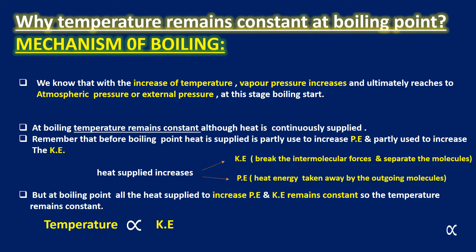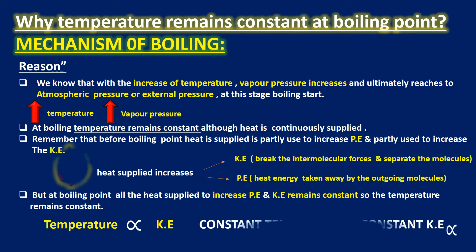So the question is: why does temperature remain constant at boiling point? To understand this, let's start understanding the mechanism of boiling. We know that with the increase of temperature, vapor pressure increases and ultimately reaches the atmospheric pressure or external pressure, and at this stage boiling starts. At boiling, the temperature remains constant although heat is continuously supplied. Why?